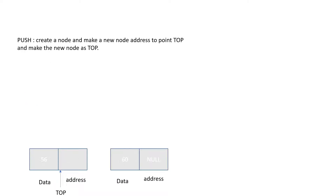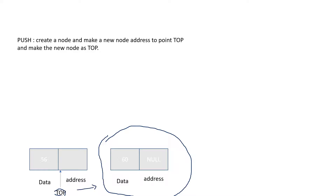Let us see how we are going to insert an element into the stack. If the stack is empty, the node you created is your top node. If there are already elements in the stack, three things have to happen. First, you create a new node. Then, make the address of this new node point to the previous node. Finally, move the top pointer to the new node. These are the three steps you have to perform for a push operation.